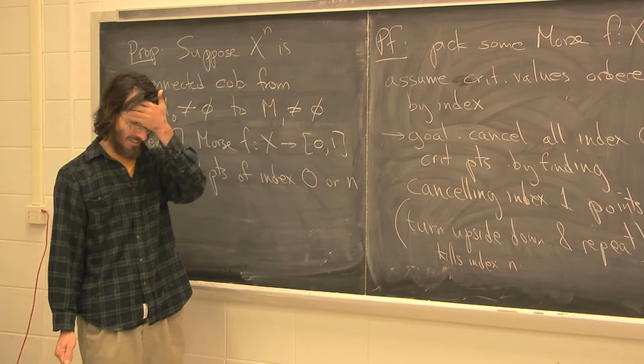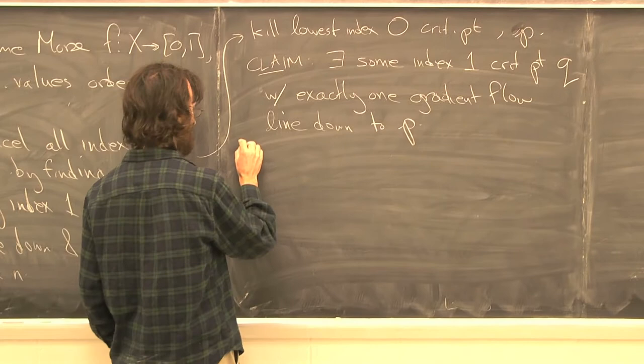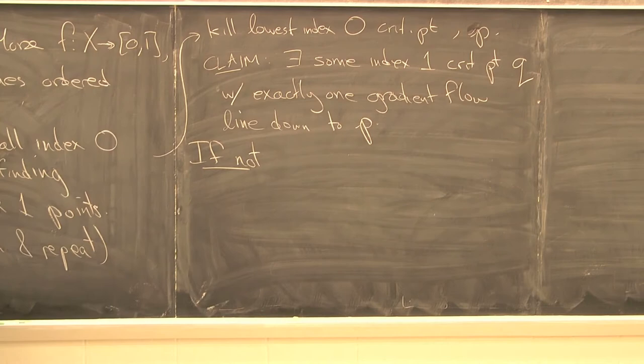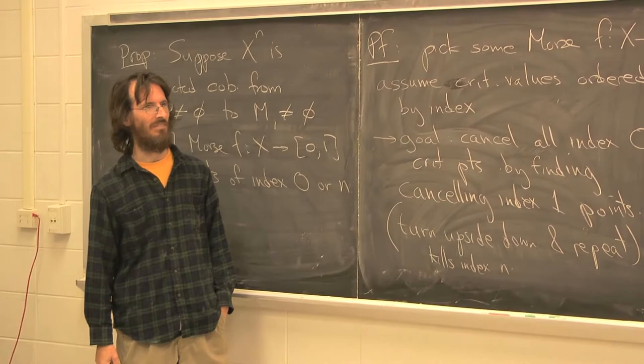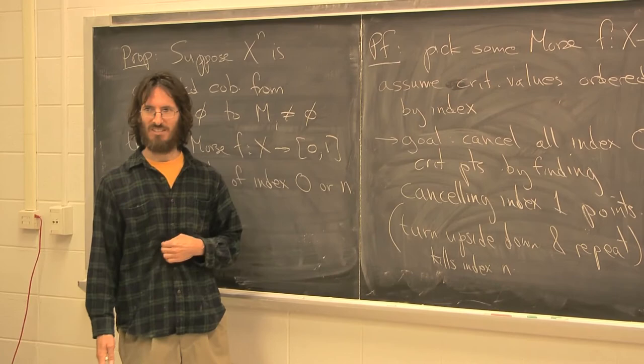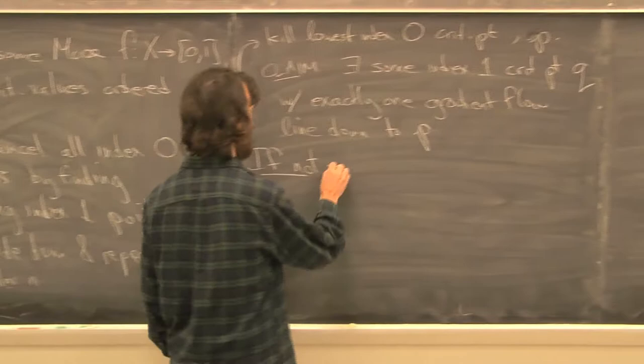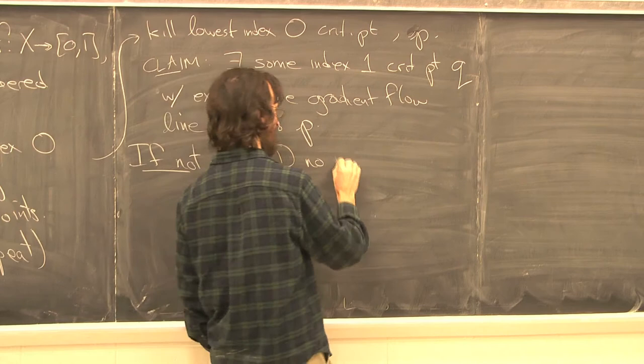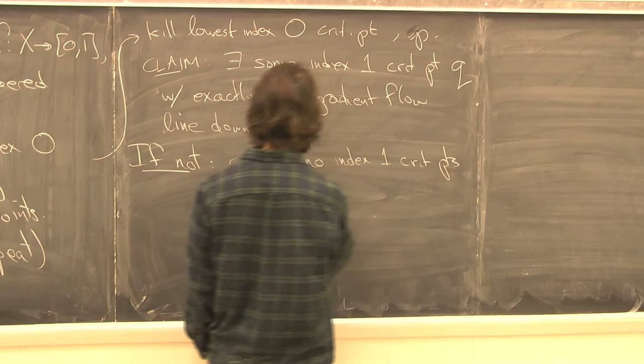Let's prove that claim by contradiction. If not, there are a couple of choices. There are no index-1 critical points that have any flow lines down to p. Index-1 critical points are kind of special: the descending manifold for an index-1 critical point has only two directions, so you either hit a given point zero times, once, or twice — and that's it.